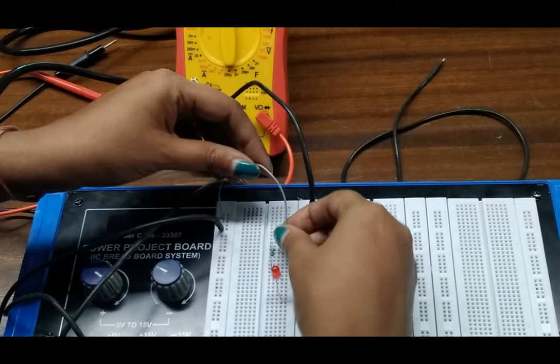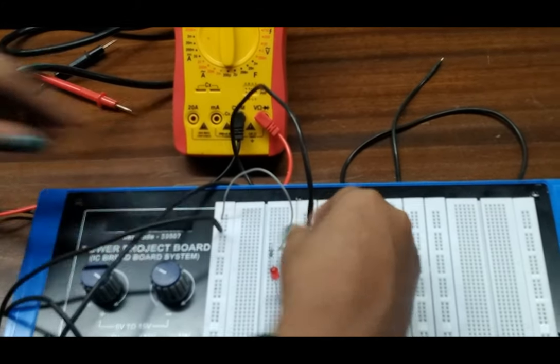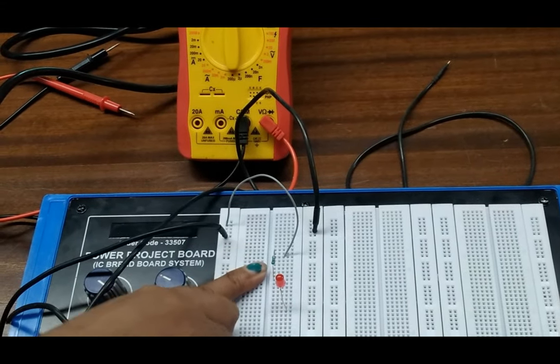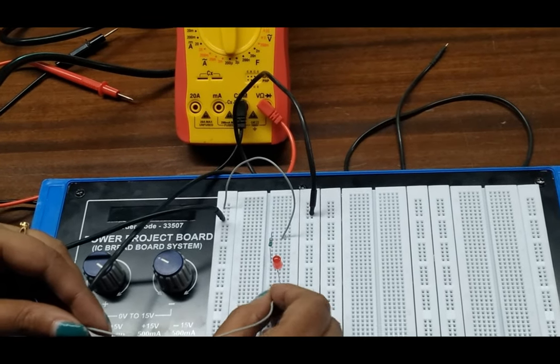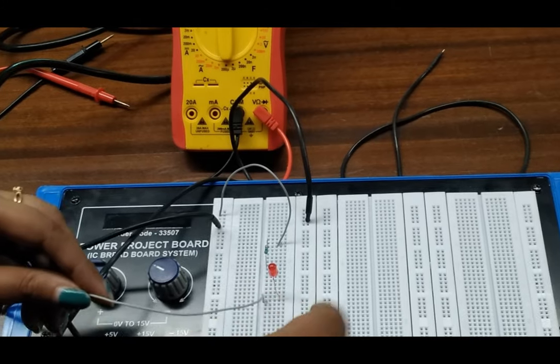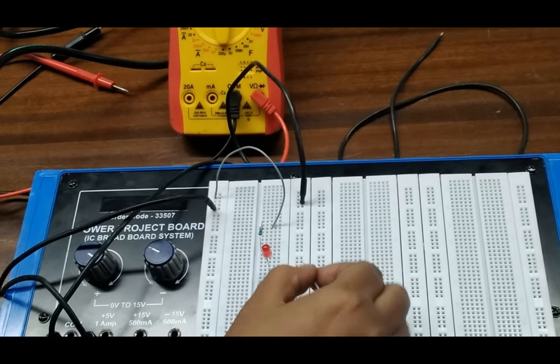We will give the power supply to one end of the resistor. The resistor is connected with the positive section of the LED, and now we connect this to ground.